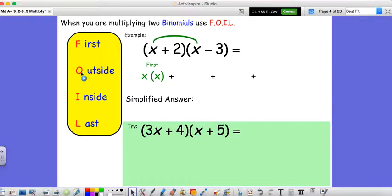Then you do the outside terms. So you have x, which is on the far left, times negative 3, which is on the far right, the two outside terms. The two inside terms come next, which you can probably guess are the two terms that are on the inside close together, 2 times x.